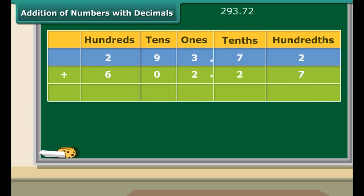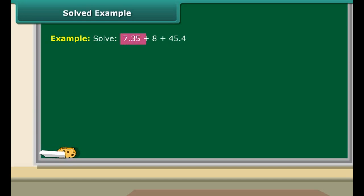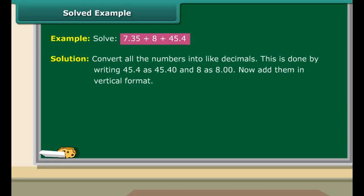Let us start with the addition of 293.72 and 602.27. Place the digits according to their place value in the table and add as in ordinary addition. Place the decimal point before two digits from the right. Now let us solve 7.35 plus 8 plus 45.4. These are unlike decimals — write 45.4 as 45.40 and 8 as 8.00, then add in vertical format. The result is 60.75.